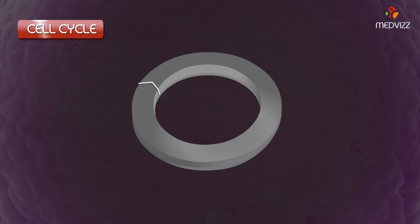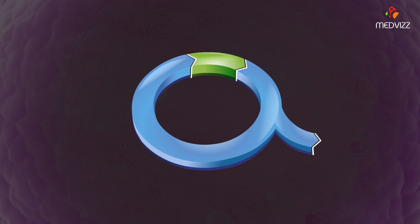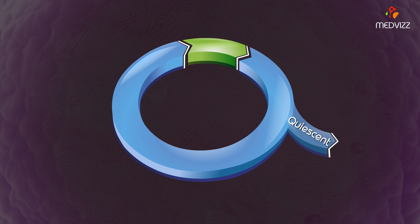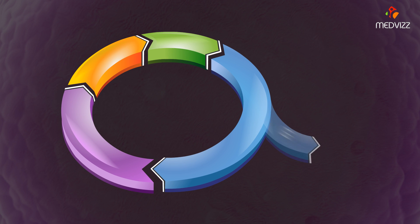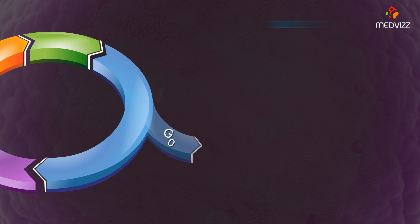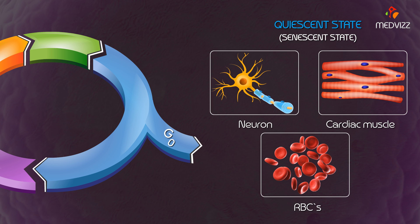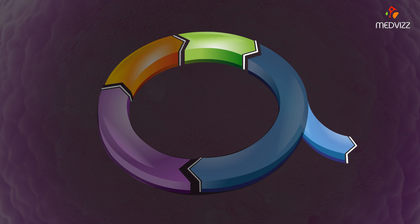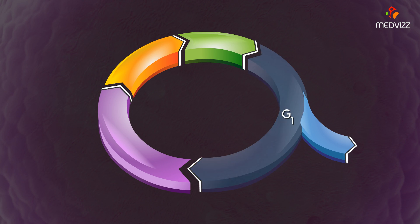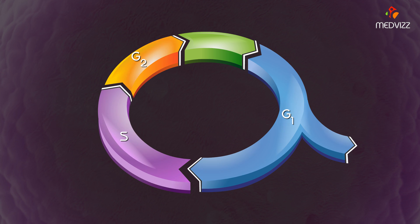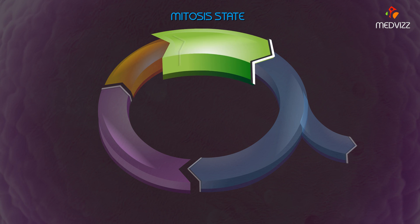The cell cycle has three states—quiescent, interphase, and mitosis—and five phases: G0, G1, S, G2, and M. The quiescent state, also known as the senescent state, comprises the G0 phase; examples include neurons, cardiac muscle, and RBCs. The interphase state consists of G1, S, and G2 phases, and the mitosis state consists of the M phase.